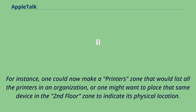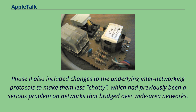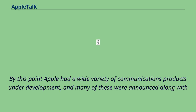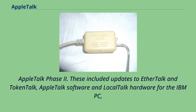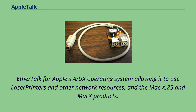Phase 2 also included changes to the underlying internetworking protocols to make them less chatty, which had previously been a serious problem on networks that bridged over wide area networks. By this point Apple had a wide variety of communications products under development, including updates to EtherTalk and TokenTalk, AppleTalk software and LocalTalk hardware for the IBM PC, EtherTalk for Apple's A/UX operating system, and the Mac X.25 and MiX products.